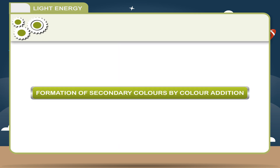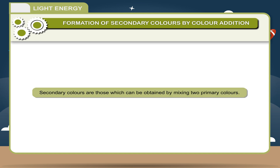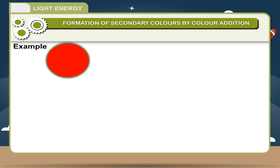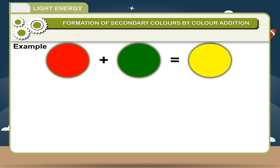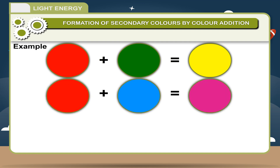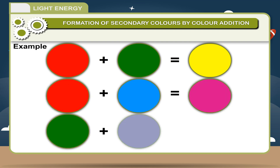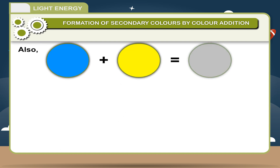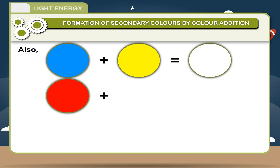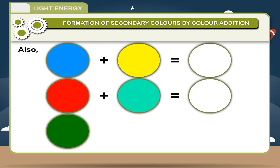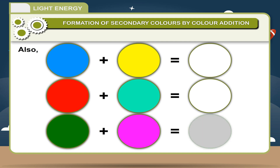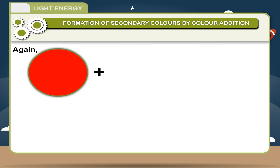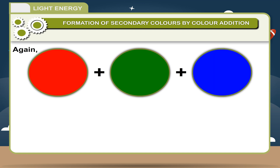Formation of Secondary Colors by Color Addition: Secondary colors are those obtained by mixing two primary colors. For example: Red + Green = Yellow; Red + Blue = Magenta; Green + Blue = Cyan. Also: Blue + Yellow = White; Red + Blue = White; Green + Magenta = White; Red + Green + Blue = White.